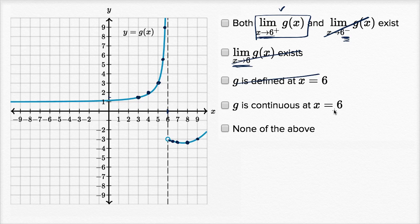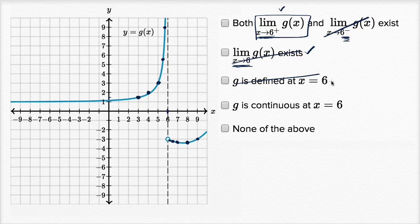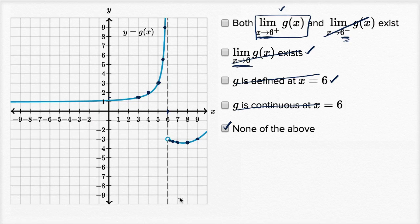G is continuous at x equals six. Well, you can see that it goes up to infinity, then it jumps back down and continues — it looks very discontinuous. More formally, in order for something to be continuous, the limit needs to exist at that value, the function needs to be defined at that value, and the value of the function needs to equal the value of the limit. Neither of the first two conditions are true, so g is not continuous at x equals six. The only thing I could check here is none of the above.